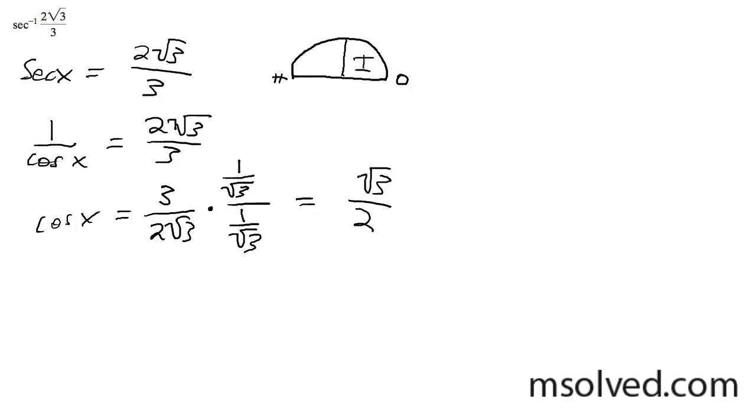And since it's the cosine, this is the adjacent over the hypotenuse. So what I'm going to do is I'm going to draw a triangle here. So my adjacent is going to be root 3 and my hypotenuse is 2.